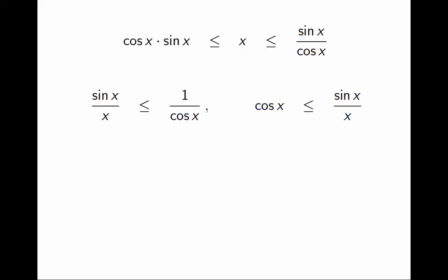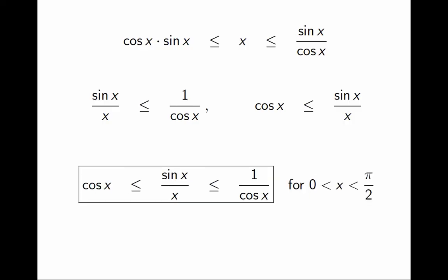All these manipulations are legal because I am just multiplying inequalities by positive numbers. Now I merge both inequalities together to conclude that sin(x) over x is sandwiched between cos(x) and 1 over cos(x). Now, for which values of x is this true? x was in the first quadrant in the original picture, so x must be between 0 and π/2. x cannot be 0 because we have divided by x.